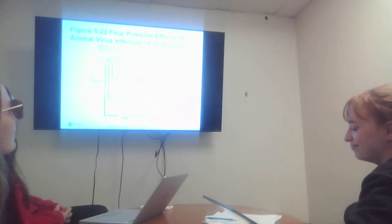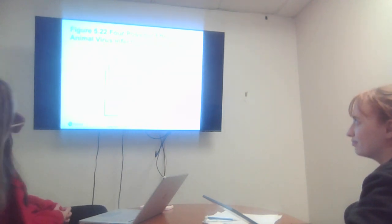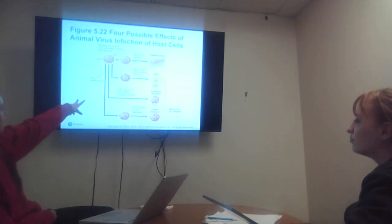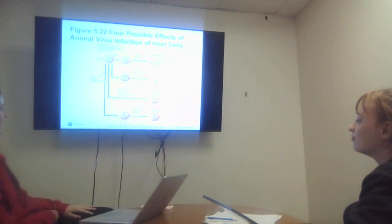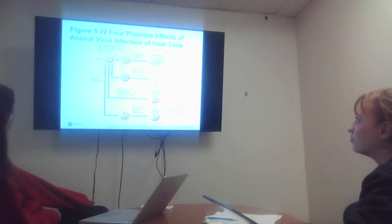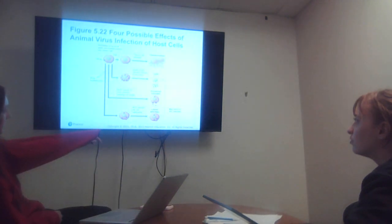These are four possible effects of animal virus infection of host cells. There's the formation of proviral state and transformation into the tumor cell. The tumor cell divides and goes through transformation again. Then there's virus multiplication, death of the cell and release of virus through lysis. Then the slow release of virus without causing cell death, which is a persistent infection. And then the virus present but not replicating, called a latent infection, which could revert to the lytic infection.